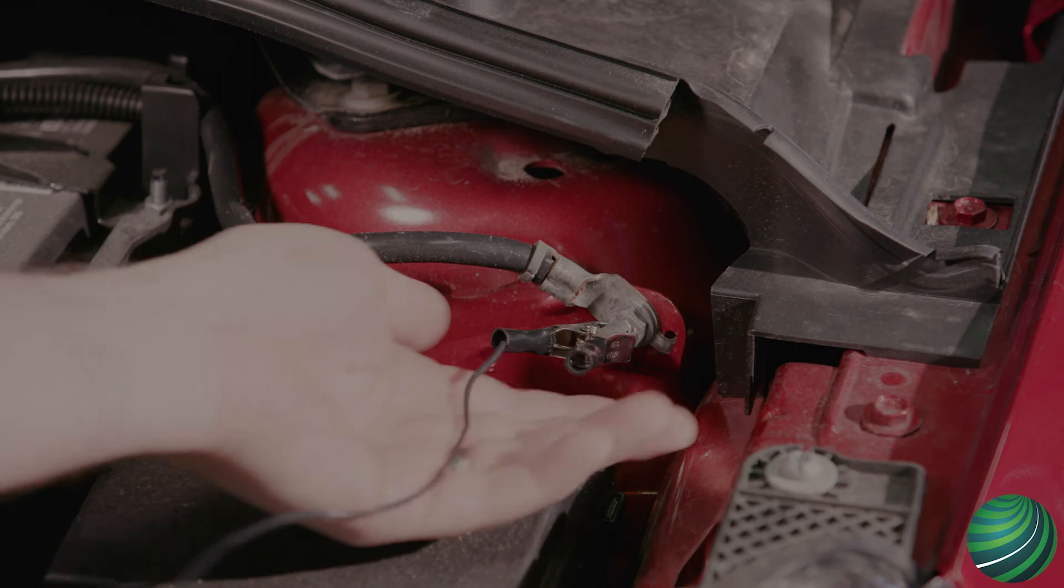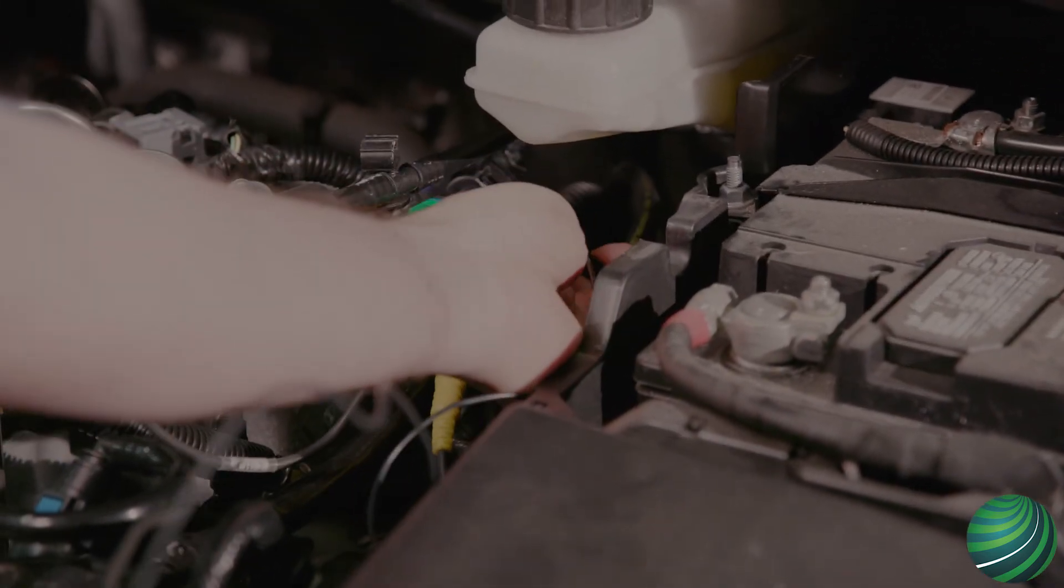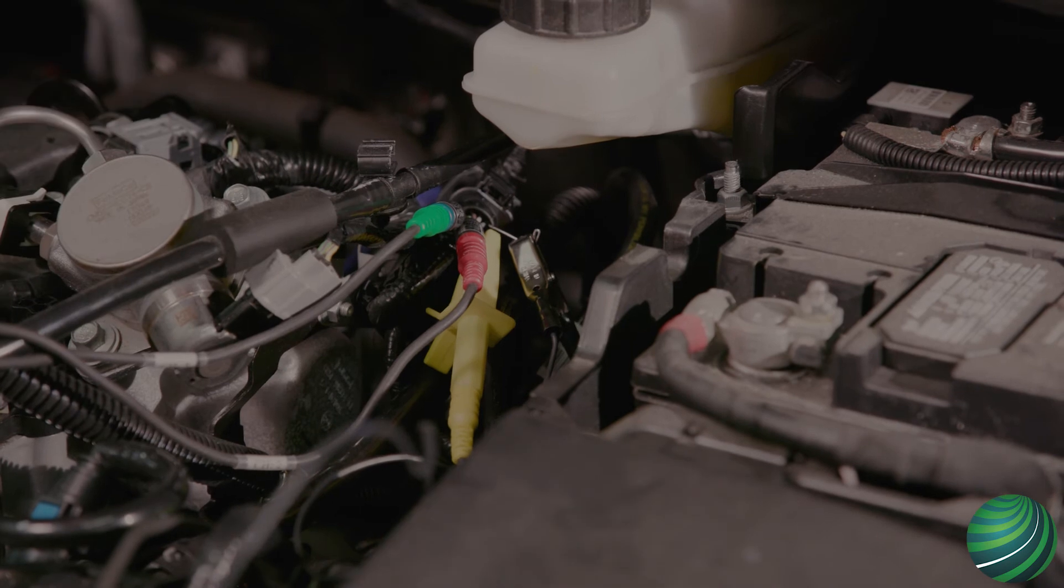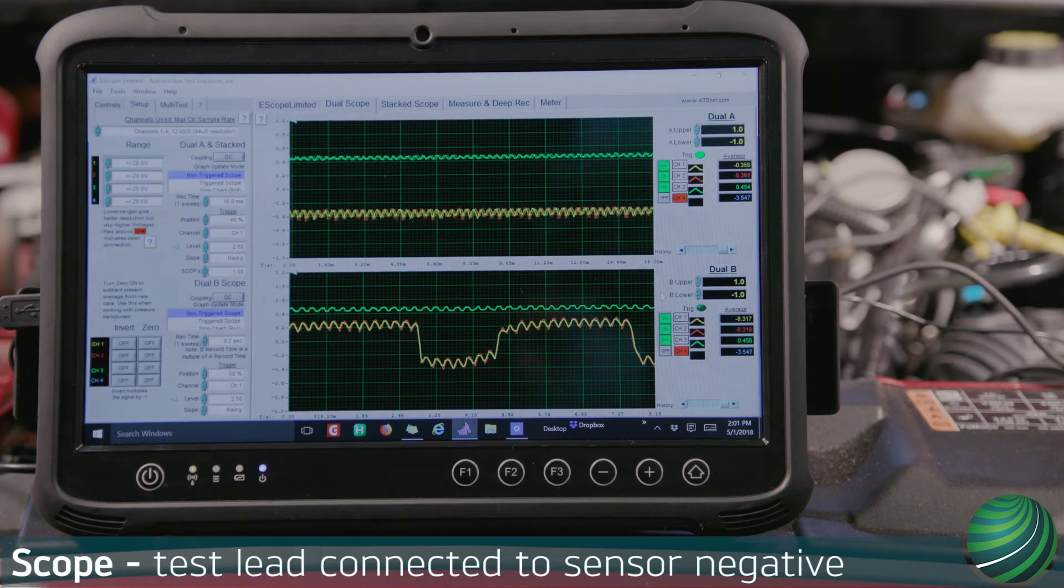When we move our scope negative test lead from battery ground to sensor ground, the sensor and pump signals go to plus or minus 350 millivolts, with a range of plus or minus 450 millivolts.